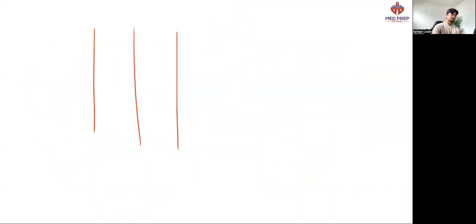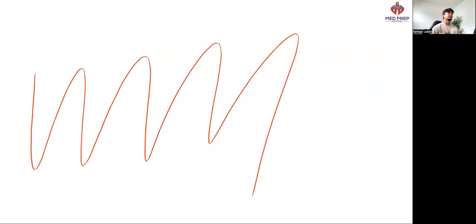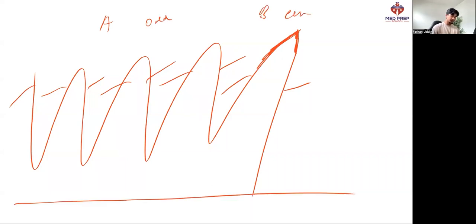I like to call these the convoluted tic-tac-toe boxes. Whenever you see something like this, immediately start counting the number of enclosed spaces — probably looking at odd versus even. Next, whenever you see sawtooth lines, start to count the number of lines that make up the sawtooth: 1, 2, 3, 4, 5, 6, 7, 8, 9. So maybe in set A it's an odd number of lines, and in set B it's an even number of lines that make up the sawtooth pattern.